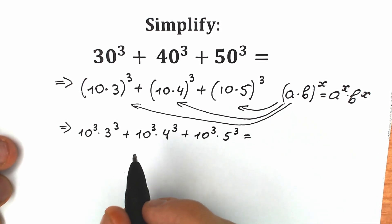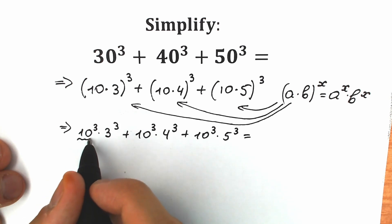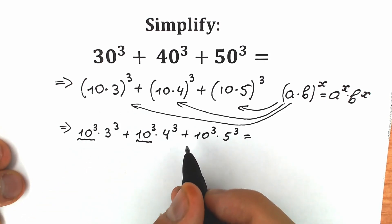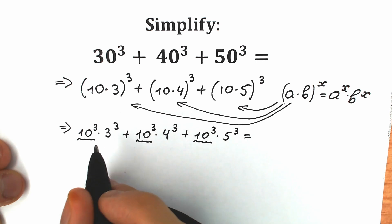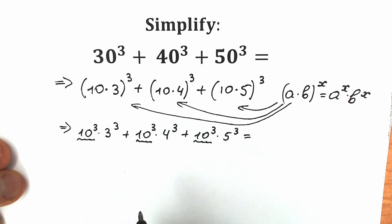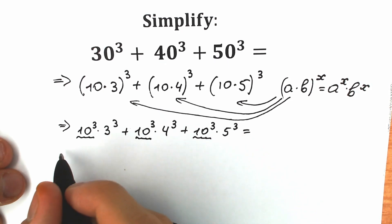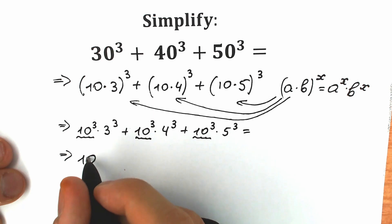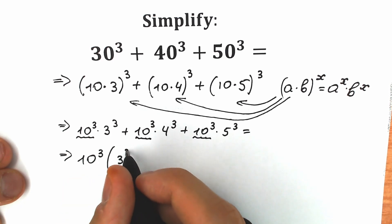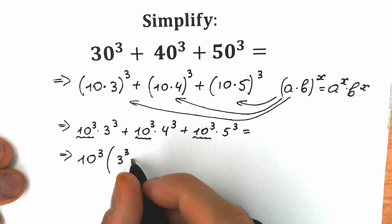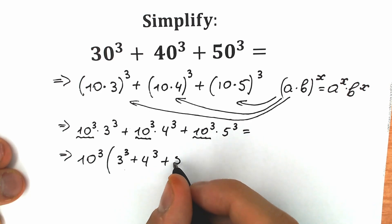I hope you understand this step. Right now, 10 cubed — we can easily factor it out from all of these expressions, because we have absolutely the same expression in each part: right here, right here, and right here. So as a result, we have 10 cubed times (3 cubed plus 4 cubed plus 5 cubed).